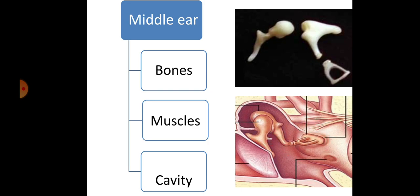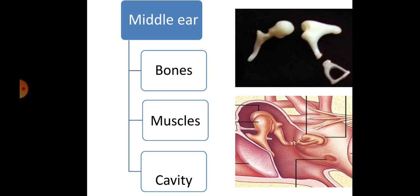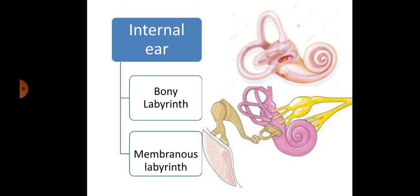Inside the middle ear cavity, there are mainly three bones and two muscles. The three bones are the malleus, incus, and stapes. The malleus is attached to the tympanic membrane and the stapes connects to the internal ear. Apart from these bones, two muscles are present: tensor tympani and stapedius.